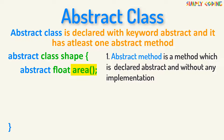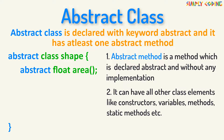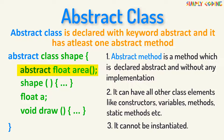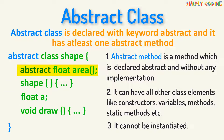Other than abstract methods, an abstract class can have all other class elements like constructors, variables, methods, static methods, etc. Because it has an abstract method area which does not have a body, an abstract class cannot be instantiated, meaning you cannot create its object directly.